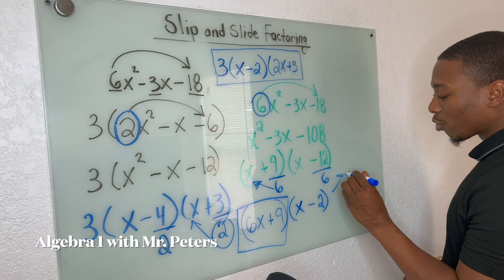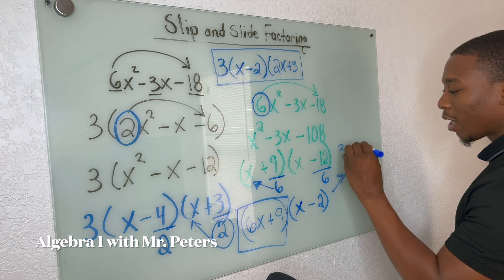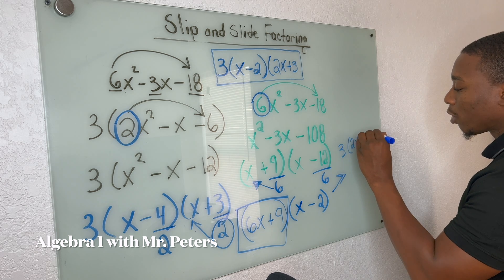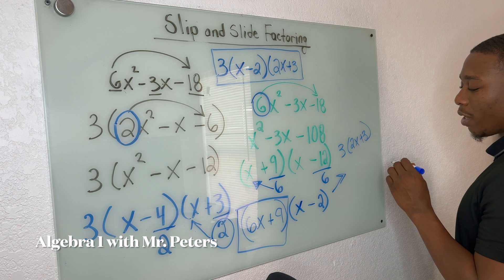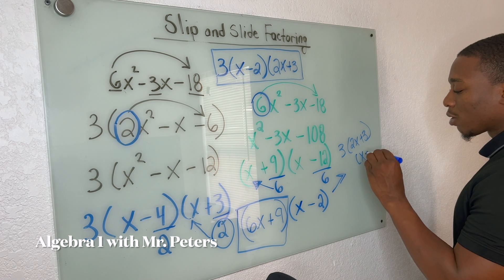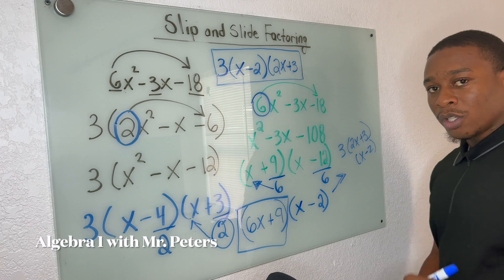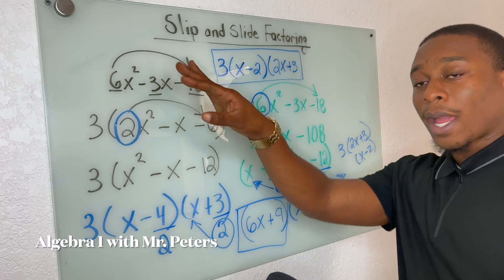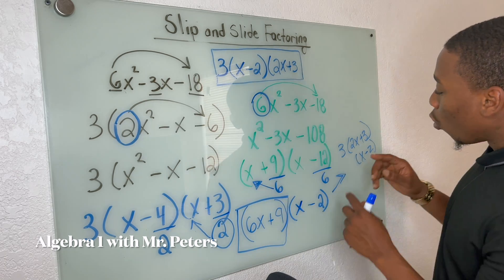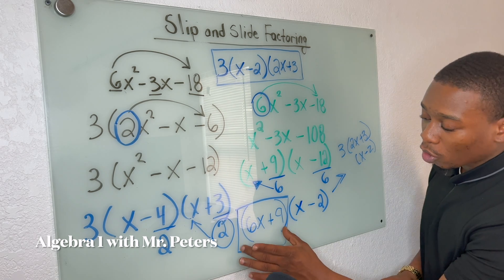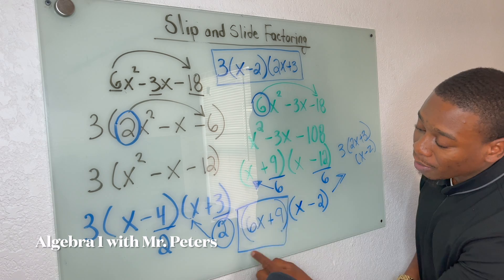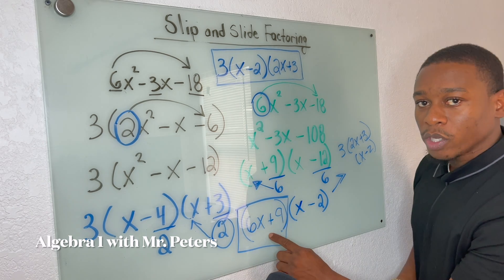My answer would be three on the outside, two X plus three. And then we're just going to put this second factor next to it, which is X minus two. So even if you didn't do it like how I did in the first way, guys, we can still get to the same answer.